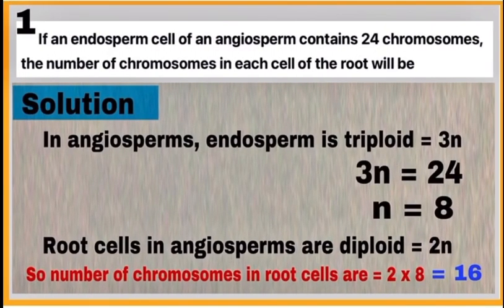In question number one, calculate the number of chromosomes in each root cell of an angiosperm if an endosperm cell has 24 chromosomes. The answer is 16. To calculate this, remember endosperm is triploid, meaning 3n, while root cell is diploid, meaning 2n.